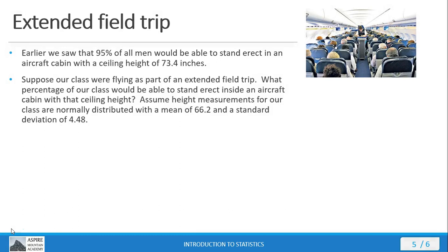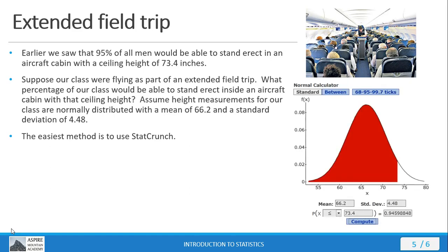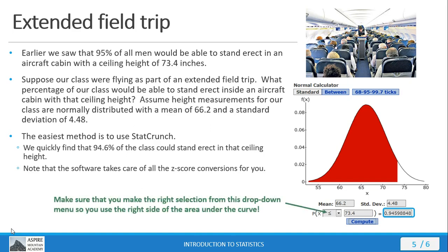Now let's look at a variant: suppose our class were flying on an extended field trip. What percentage of the class could stand erect inside a cabin with a ceiling height of 73.4 inches? Pause the video and try to solve it. The easiest method is to use StatCrunch — enter the mean and standard deviation, set the ceiling height to 73.4, and look for 'less than.' The result is 94.6% of the population. Make sure you have the right inequality selected when solving these problems.